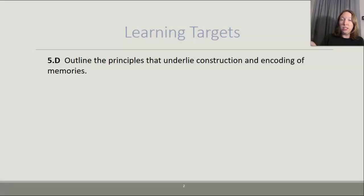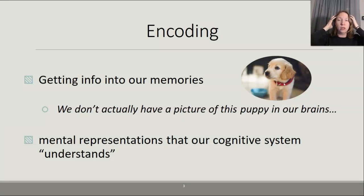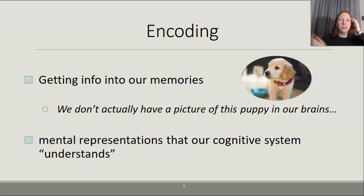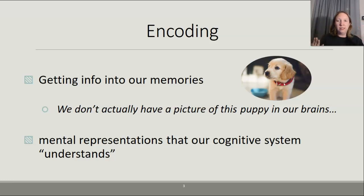There's only one learning target, not too bad. Let's get into what encoding is. This is the idea of getting information into our memories, into our mind, into our consciousness — not necessarily our actual physical brain, although that is of course part of this. We'll talk about that more in the next lecture, but how do we get these mental representations into our consciousness, into our cognitive system, in a way that we can understand it?